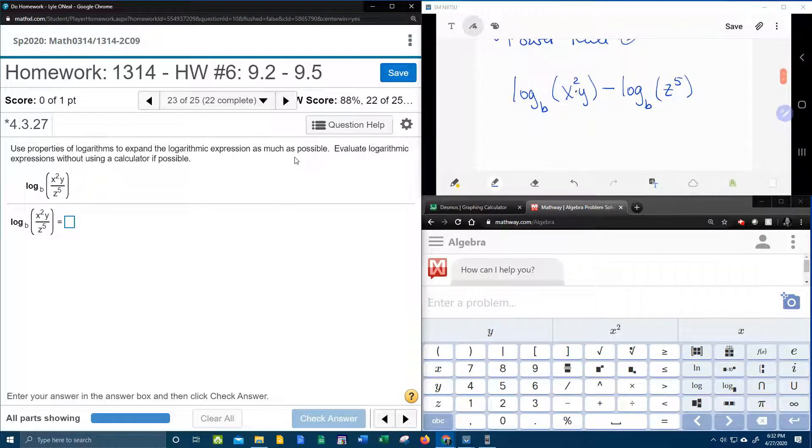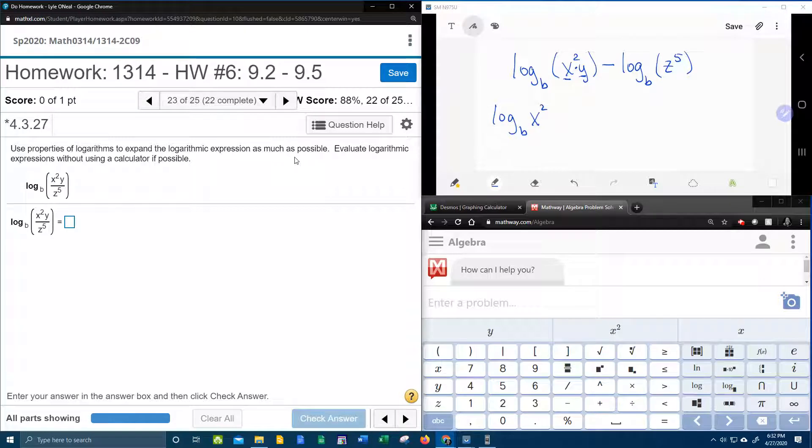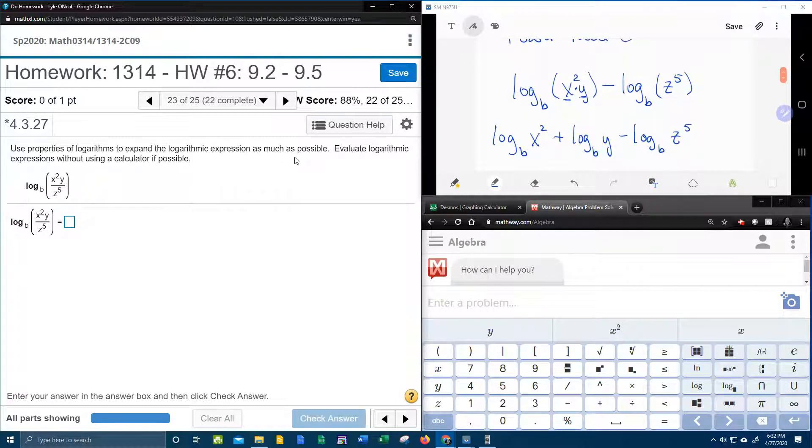Next, we're going to apply the product rule. So the x and the y are going to get separated, each into their own log cabin. It's going to be log base b of x squared. Product turns into a plus. Log base b of y. And then we're going to bring down minus log base b of z to the fifth. So now what happened there? That was the power rule. The x and the y got separated.